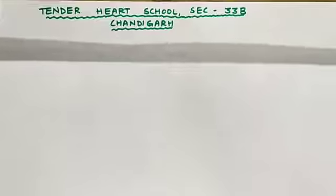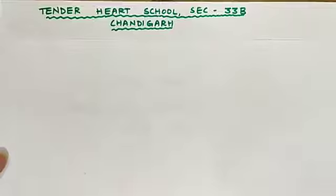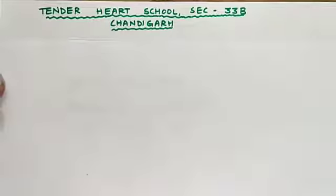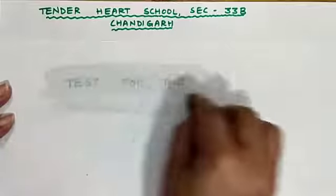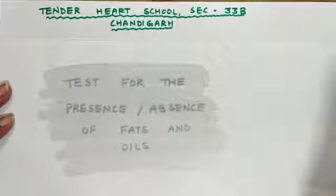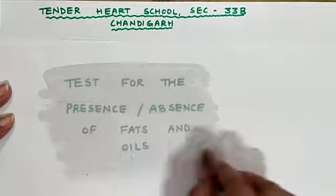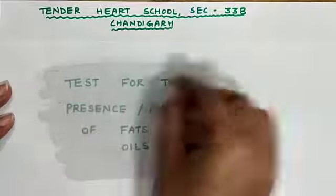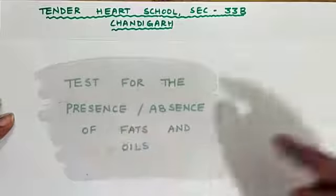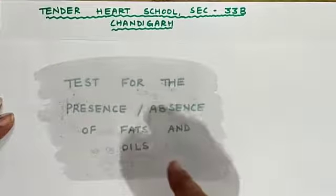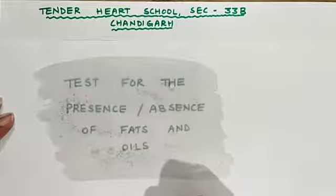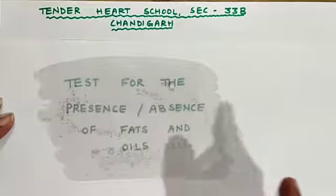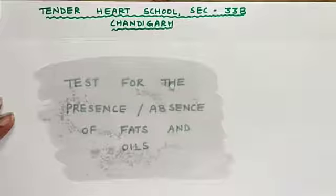I have taken a sheet of paper and placed it over some text. Can you read anything? Nothing is visible — you cannot see what is written below. Now I will apply some oil over this sheet of paper. See this — now can you read it? When I apply the oil, the paper turns translucent, and you can now read what was written below.